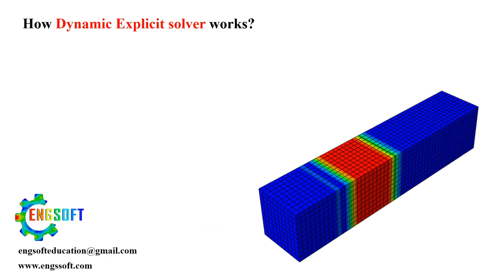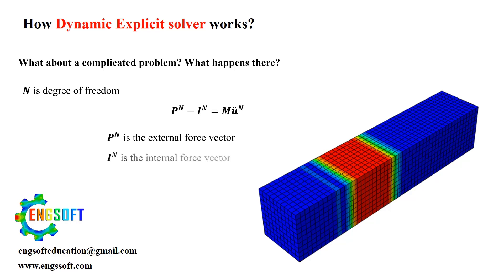But what about complex problems? Imagine you have a problem with n degrees of freedom. The equilibrium equation relates the external forces p, internal forces i, and nodal accelerations u double prime. Since the mass matrix is diagonal, solving this for accelerations is computationally efficient compared to implicit methods, which require inverting the stiffness matrix.